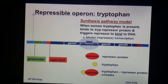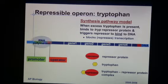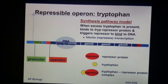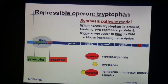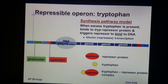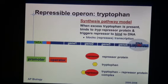Here we have a repressible operon. The example we're going to use is tryptophan. Bacteria have a series of genes that, when transcribed by RNA polymerase, will form RNA, and the RNA will be turned into a couple of different enzymes. Those enzymes will work together to make tryptophan.